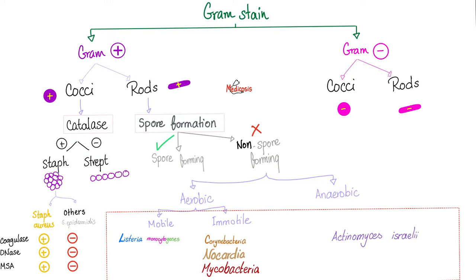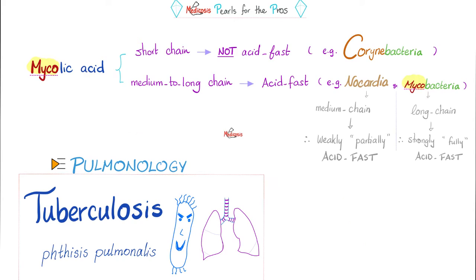Mycobacteria are anatomically gram-positive rods. Spore-forming? No. Aerobic? Yes. Motile? No. Let's review what we have said before. Mycolic acid is present in Corynebacteria, Nocardia, Mycobacteria, and others.